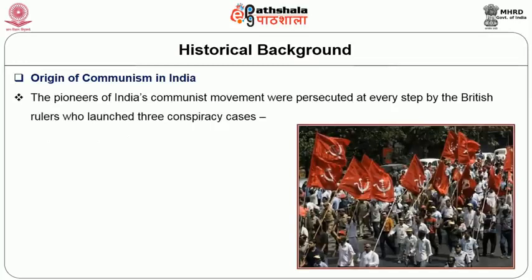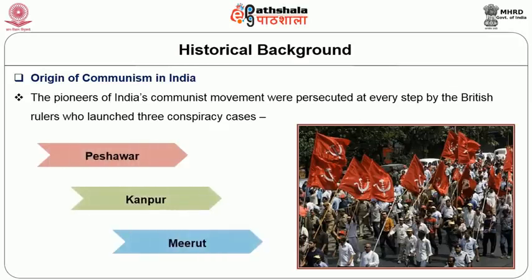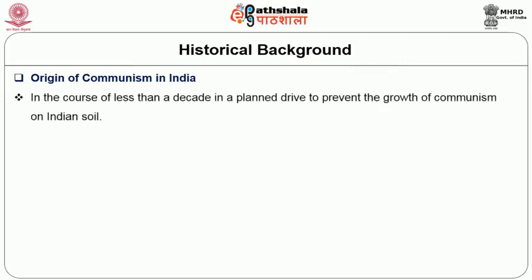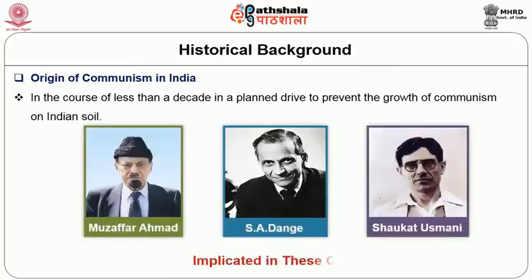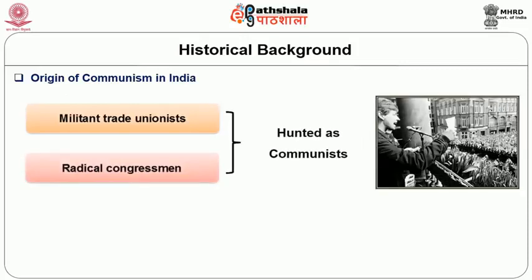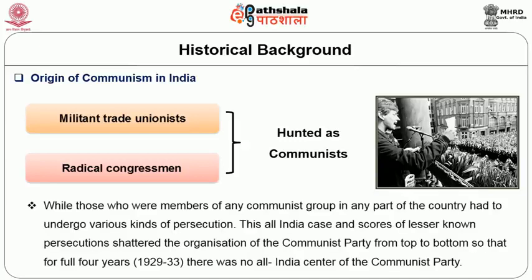The pioneers of India's communist movement were persecuted at every step by the British rulers, who launched three conspiracy cases — Peshawar, Kanpur, and Meerut — in the course of less than a decade, in a planned drive to prevent the growth of communism on Indian soil. Muzaffar Ahmad, S.A. Dang, and others were implicated in these cases. Hundreds of other militant trade unionists and radical congressmen were hunted as communists, while those who were members of any communist group had to undergo various kinds of persecution. This all-India case and scores of lesser-known persecutions shattered the organization of the communist party from top to bottom, so that for full four years there was no all-India center of the communist party.